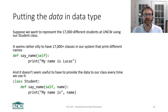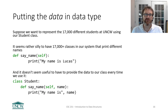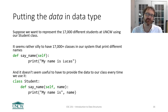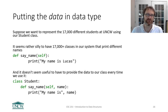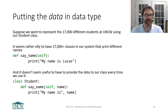Suppose we have 17,000 students in our system — about what we have here at UNCW. Before, our very simple class just printed out the person's name. If we want 17,000 students with different names, using our first approach where we had a separate class per student, we'd need 17,000 different classes. That's a little silly and no good.